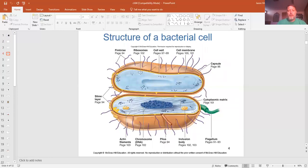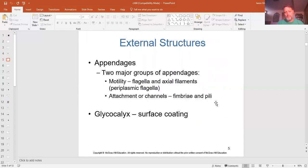There's a generic structure showing pretty much everything on a bacteria cell. Most of them do not have everything. They have some, but not all of them usually. So let's start with the external structures. The appendages, two main types, either for motility or attachment, are the major appendages. And then they have an external structure called a glycocalyx. This is a surface coating.